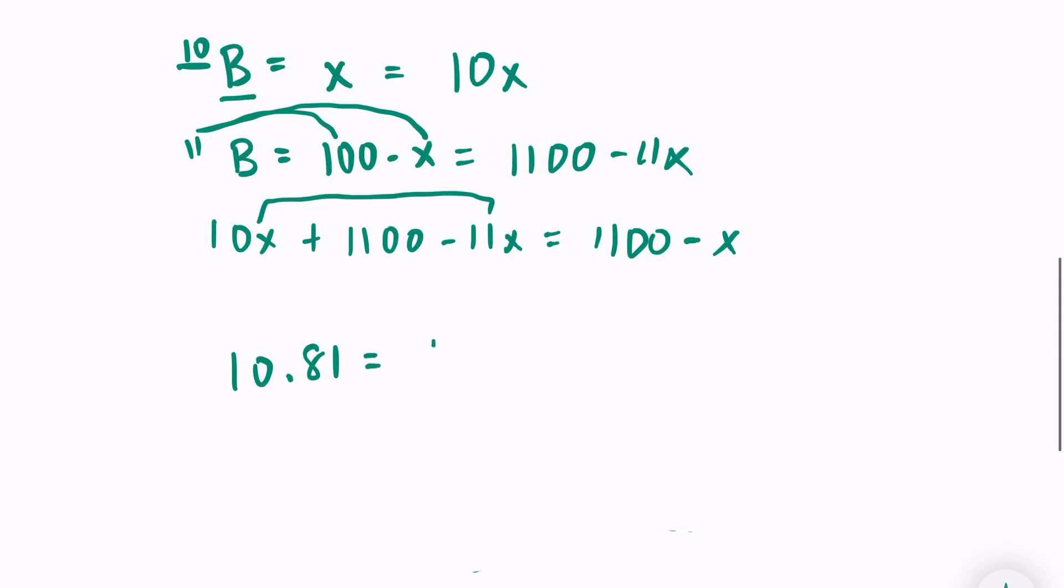We have 10.81 is equal to 1100 minus x over 100. And I want to get the x by itself, so I'm going to multiply the 100 to the other side.